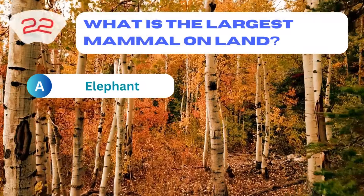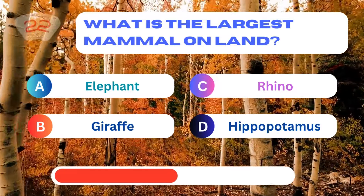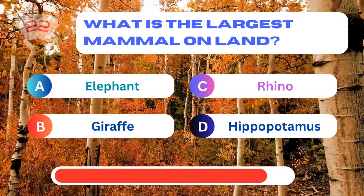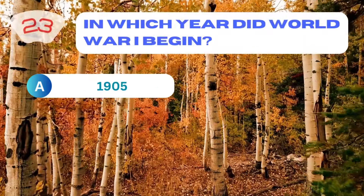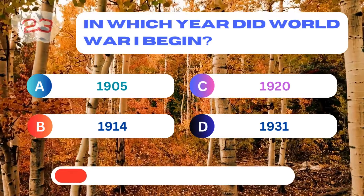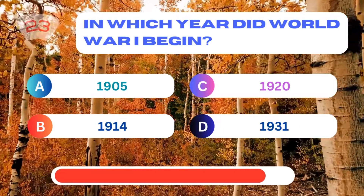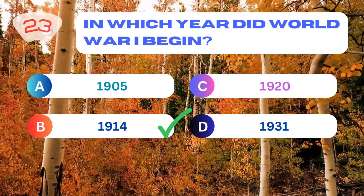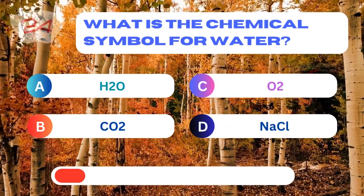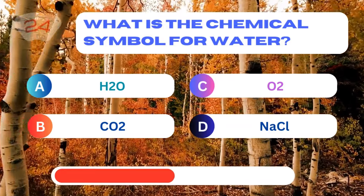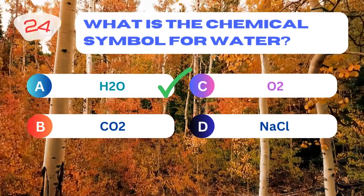What is the largest mammal on land? Elephant. In which year did World War I begin? 1914. What is the chemical symbol for water? H2O.